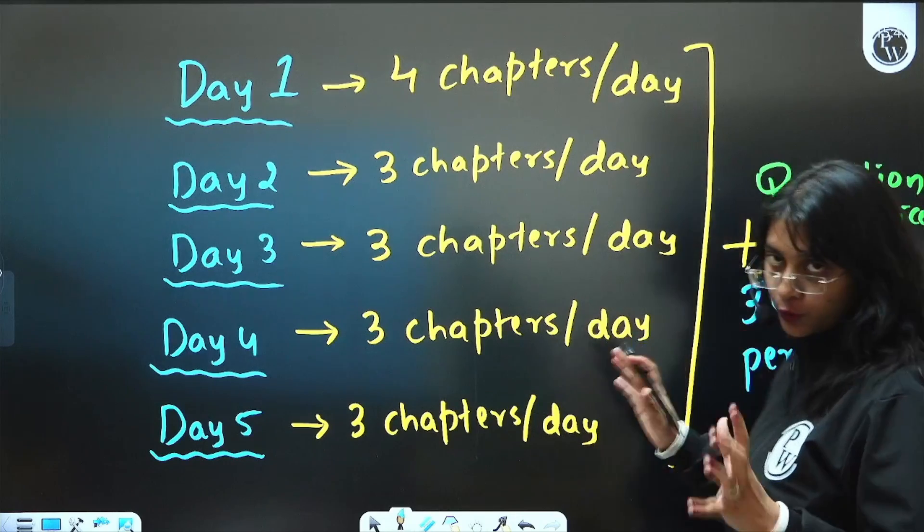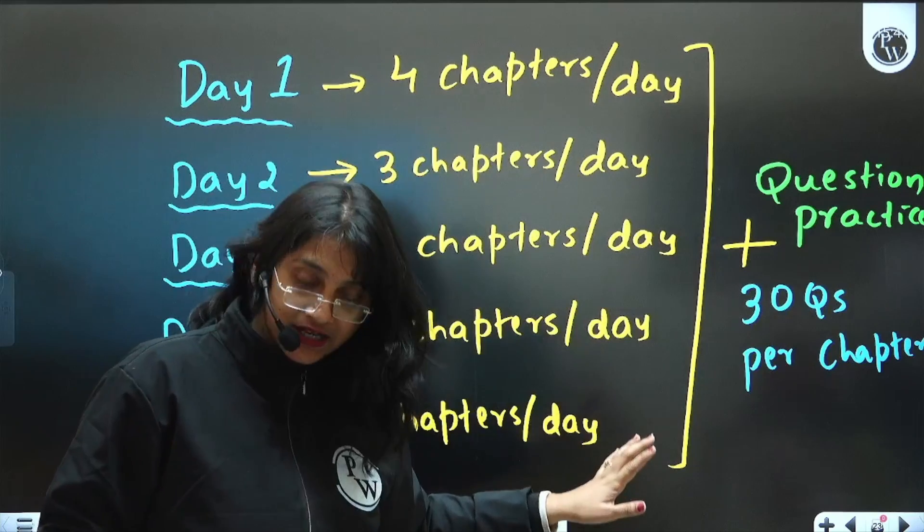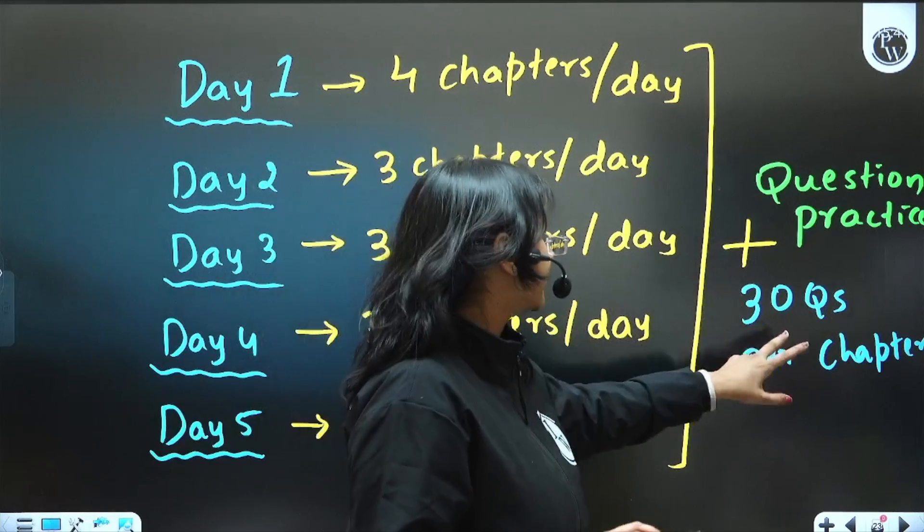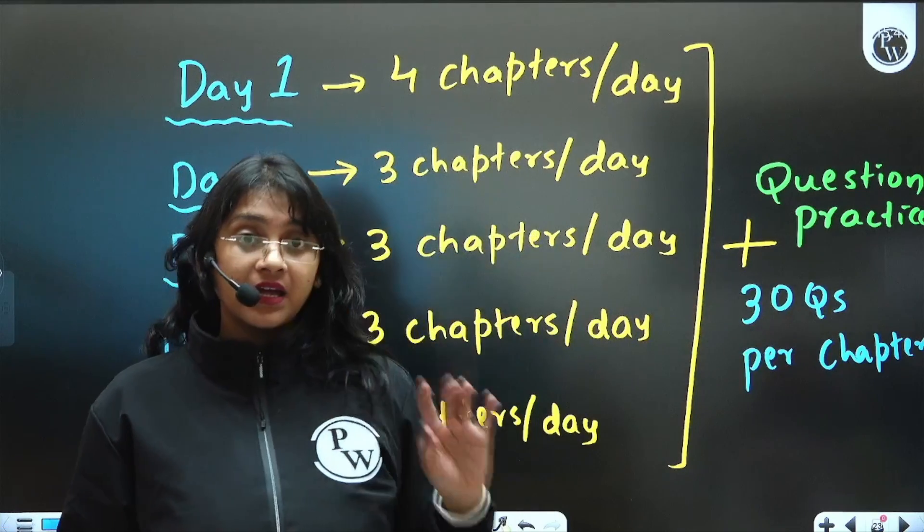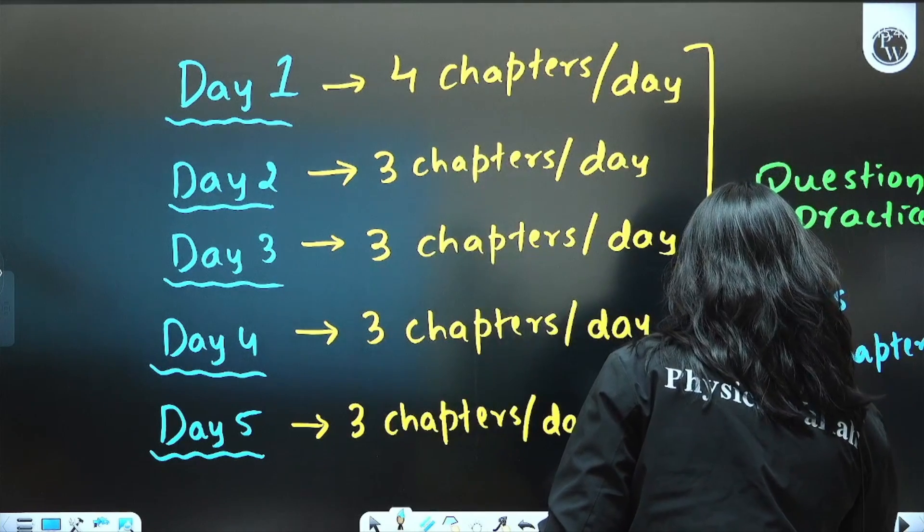Let's not drag it too much. You have to start with this at least. So 4 chapters you should be revising in a day, starting with 30 questions per chapter. And if you're easily able to do 30, then increase to 50 questions.